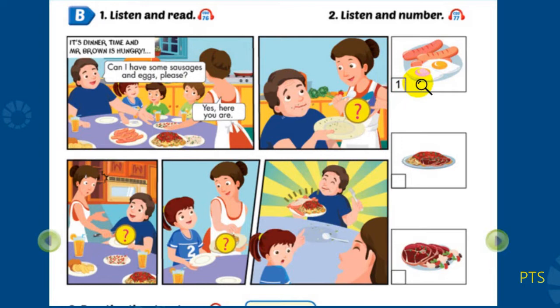Now, listen and number. 2. Mmm, beans and meat. Can I have some beans and meat, please? Yes. Here you are. Thanks.